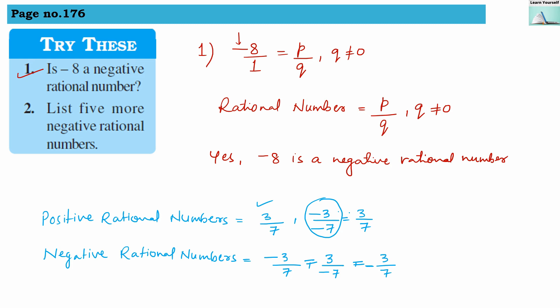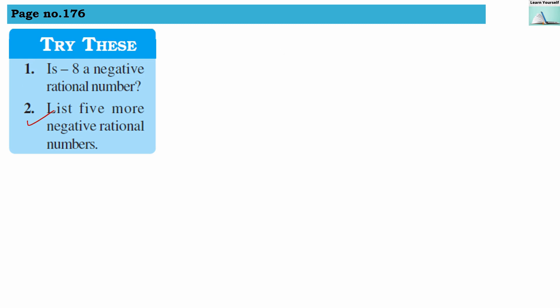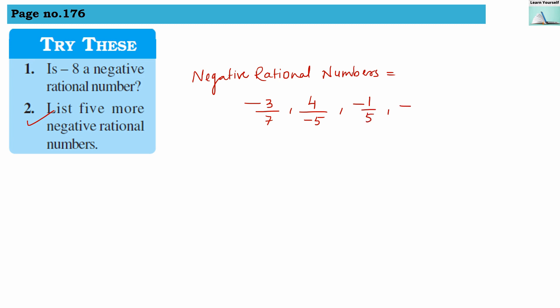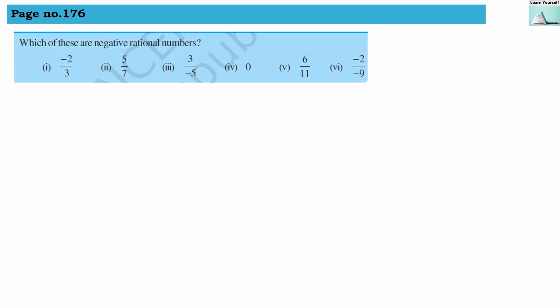Second question: list five more negative rational numbers. The answers are: minus 3 divided by 7, then 4 by minus 5, then minus 1 by 5, then minus 6 by 7, and 7 by minus 8. All of these are negative rational numbers.